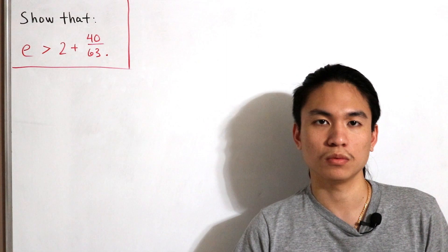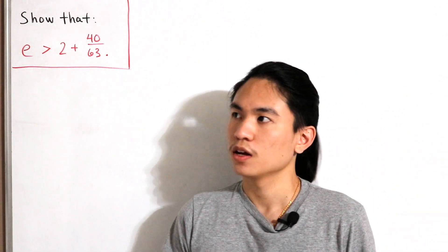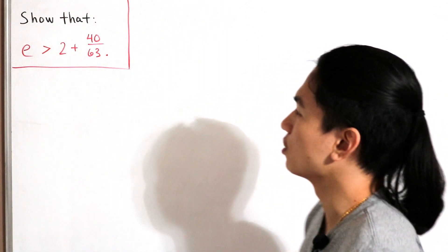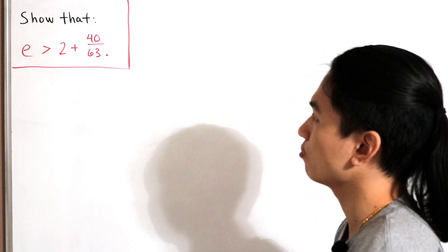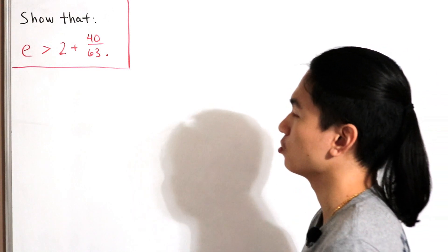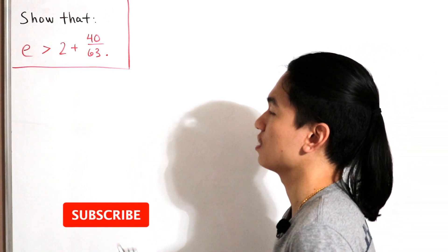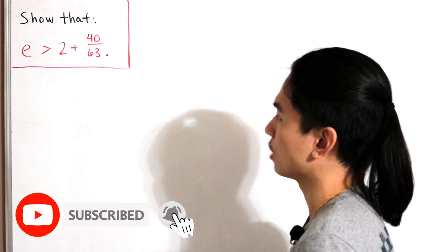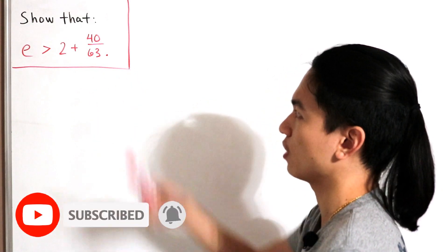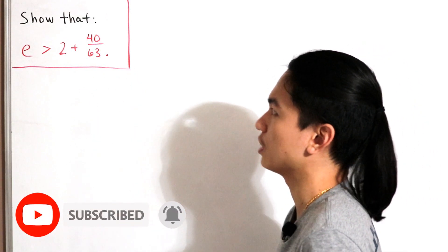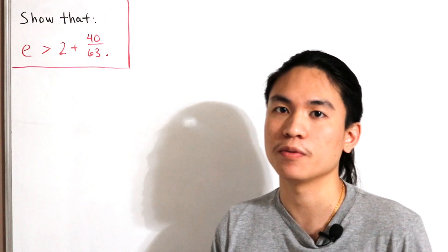Welcome back to another video. Today's video is a simple inequality proof and we want to show that the mathematical constant e is strictly greater than 2 plus 40 divided by 63. It's a simple analysis problem.